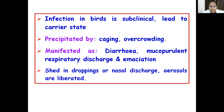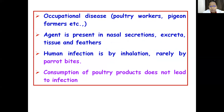Emaciation is a state of being excessively thin or wasted — the birds have diarrhea, mucopurulent respiratory discharge, and their bodies are excessively wasted. Chlamydia are shed in droppings as well as nasal discharge, and aerosols are liberated by these birds. Human infection is occupational, mainly seen in poultry workers, pigeon farmers, pet shop owners, bird fanciers, and veterinarians. The agent is present in nasal secretions, excreta, and feathers.